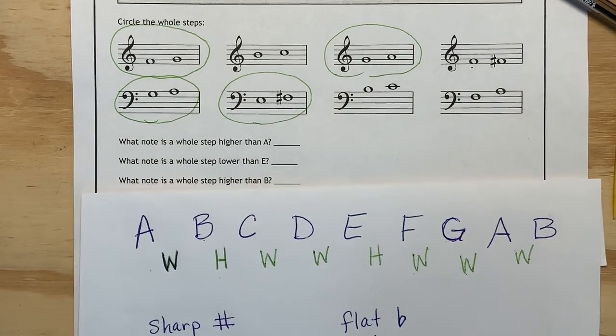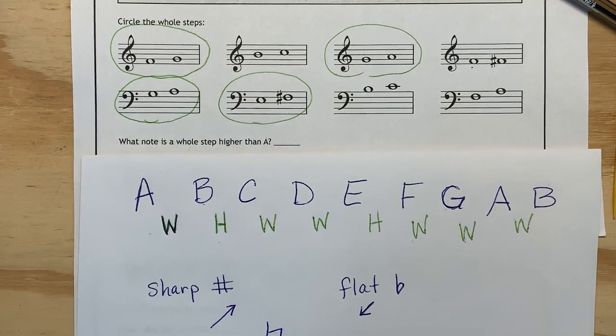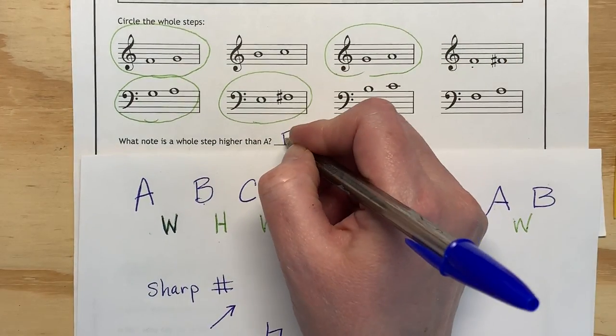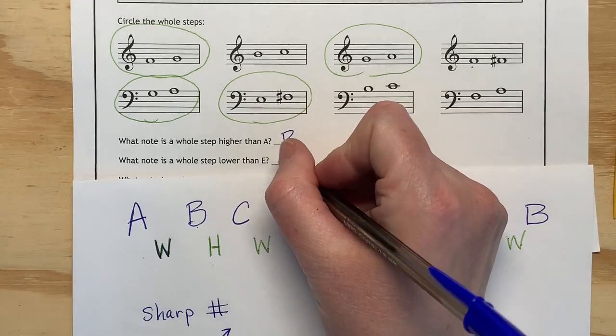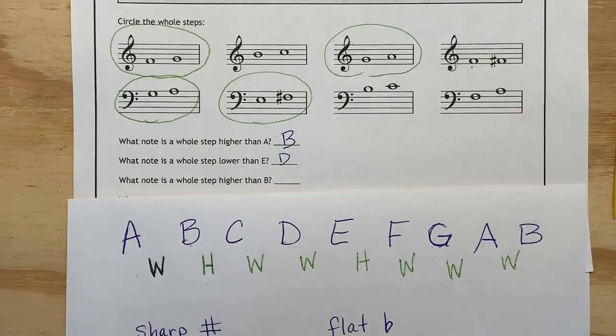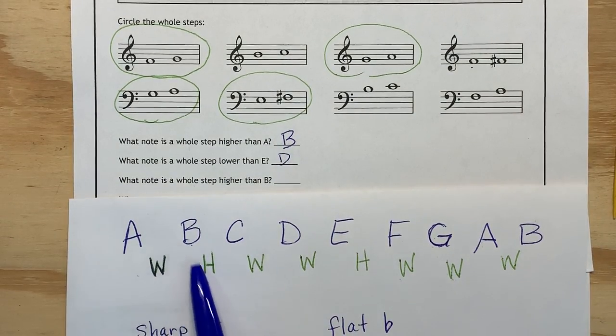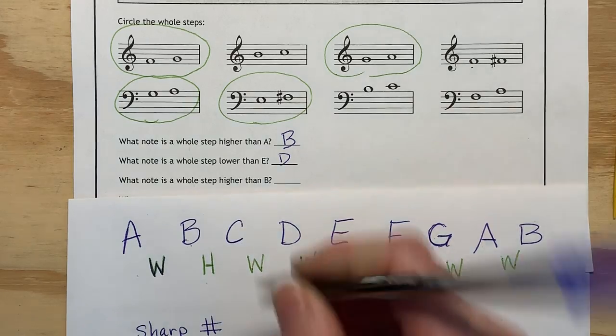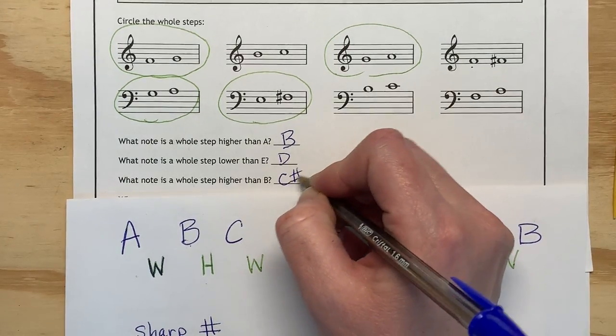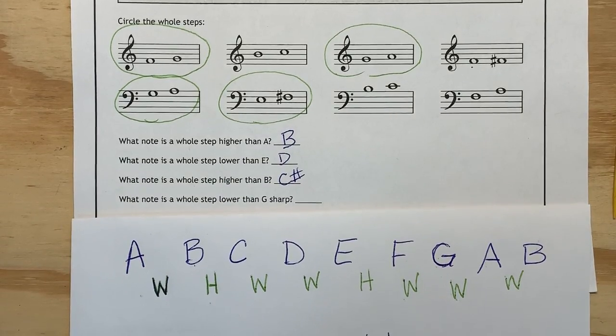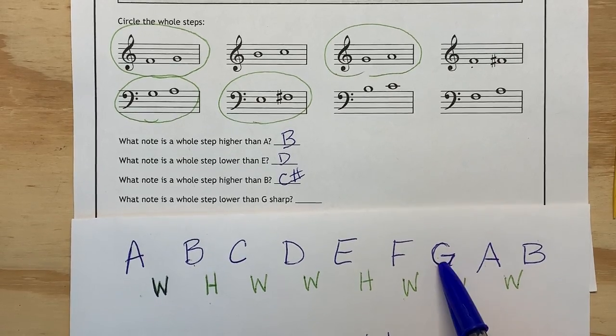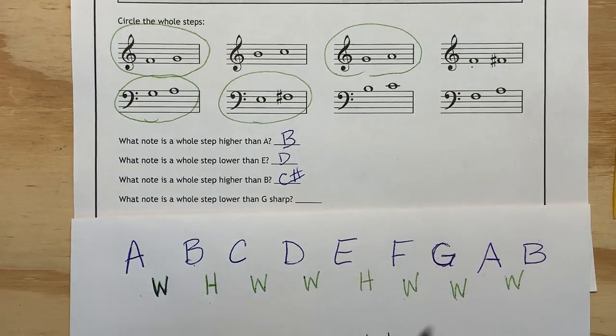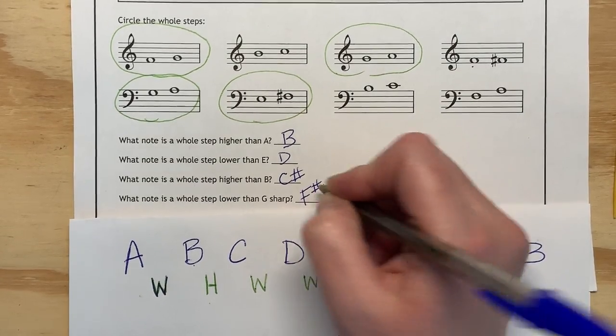What note is a whole step higher than A? That's a B. A whole step lower than E? That's a D. What note is a whole step higher than B? We only have a half, so we have to put, we know it's some sort of C, so it's a C sharp. What note is a whole step lower than G sharp? So if G is sharp, there's something in between here. G to F, G sharp to F sharp makes a whole step.